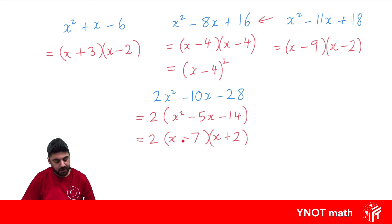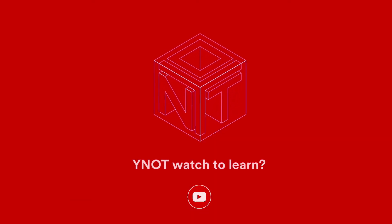Because -7 × 2 gives us -14, and -7 + 2 gives us -5.